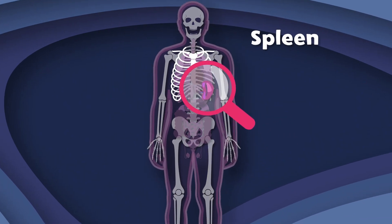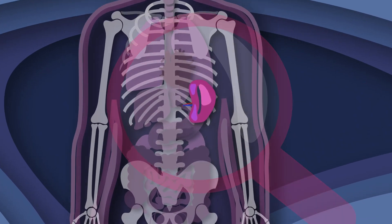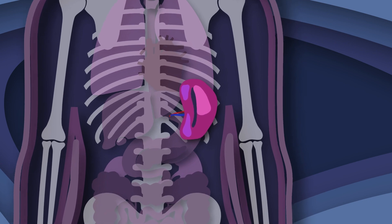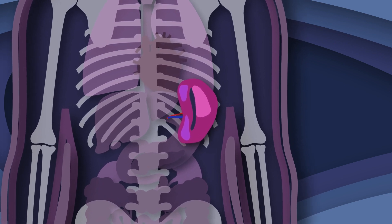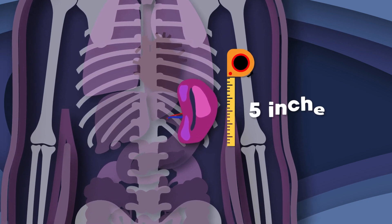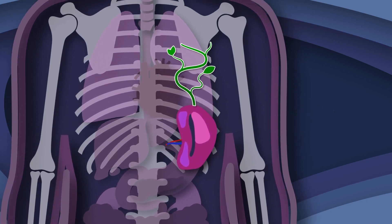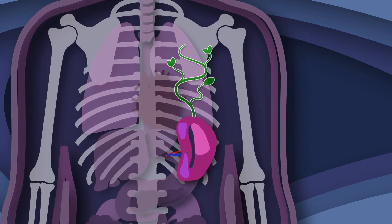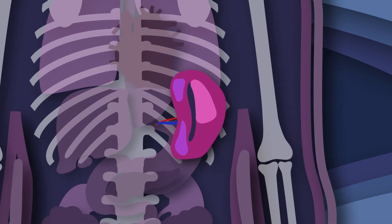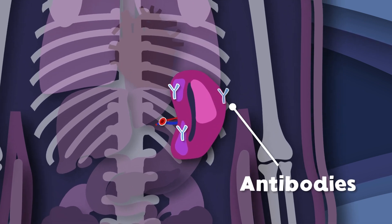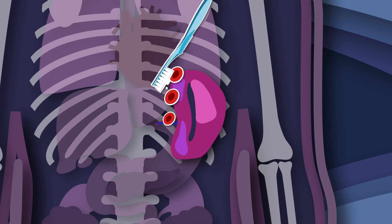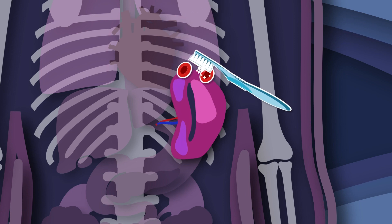I am your spleen. You will learn what this means. I am purple, 5 inches long, and I'm shaped like a bean. I'm your spleen. You will learn what this means. I produce antibodies and I keep your blood clean.